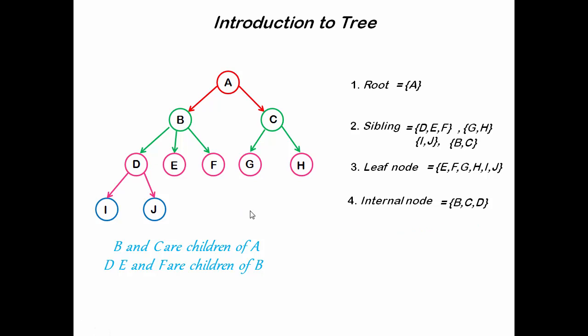Next one is, if we go from any node M to N, then M is called ancestor of N and N is called descendant of M. For example, if we go from A to E, then A and B are ancestors of E and E is called descendant of A and B.